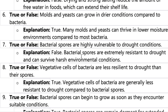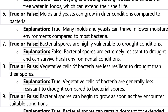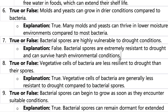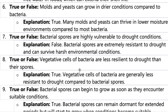Number eight: vegetative cells of bacteria are less resistant to drought than their spores. This is true — vegetative cells are less resistant to drought compared to the spores. They are inside and softer.